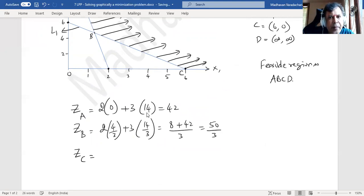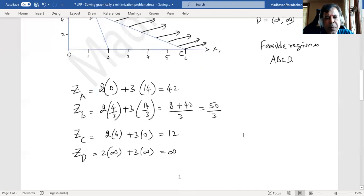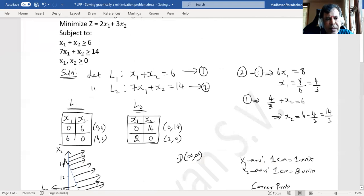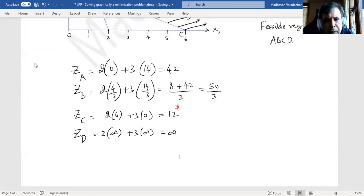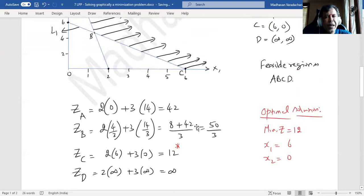Z of C is 2 times 6 plus 3 times 0, which is 12. Z of D is 2 times infinity plus 3 times infinity, which is infinity. Among these we are supposed to find the least because the problem is to minimize. The minimum Z value is 12. We can write the optimal solution as minimum Z = 12, with corresponding x₁ = 6 and x₂ = 0. That is the solution for this linear programming problem.